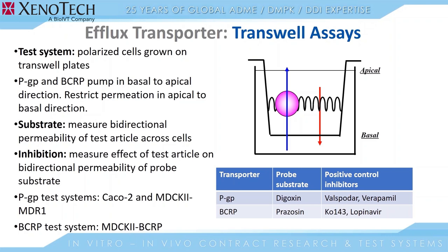The experimental design depends on the transporter being evaluated. For the efflux transporters PGP or BCRP, experiments are conducted using a transwell assay experimental design. The transwell assay can be thought of as a cup within a cup with a polarized monolayer of cells grown in between them. This creates a basal section and an apical section on either side of the monolayer of cells. Compound is added either to the apical side or the basal side, and the efflux of the compound in either direction is measured. For substrate assays, we measure the bidirectional permeability of the test article across the cells in both the A-to-B and B-to-A direction. For inhibition assays, we measure the effect of the test article on the bidirectional permeability of a known probe substrate for the given transporter.